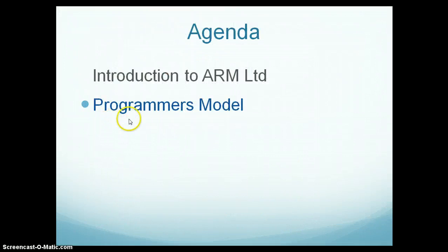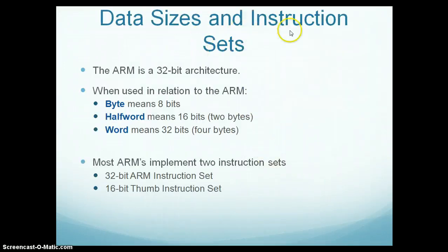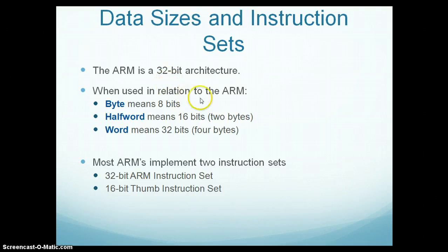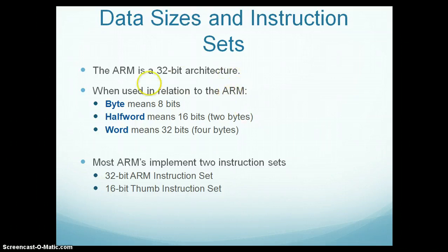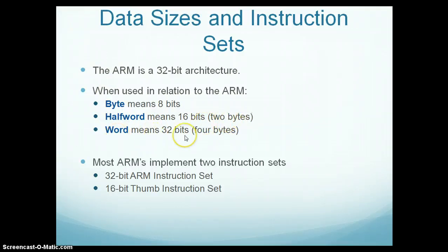Now let us see Programmer's Model — Data Sizes and Instruction Sets. ARM is a 32-bit architecture, which means that it has a data bus of 32-bit wide. ARM has three data types: byte means 8 bits, half word means 16 bits (that is 2 bytes), and word means 32 bits, which is 4 bytes.